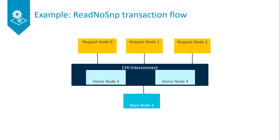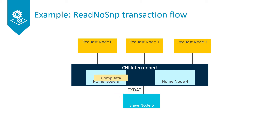Next, slave node 5 returns data to home node 3 by issuing a CompData response on its TX-DAT channel.